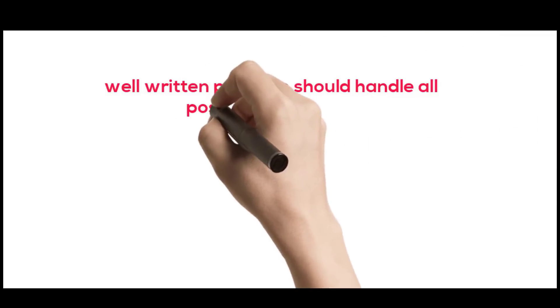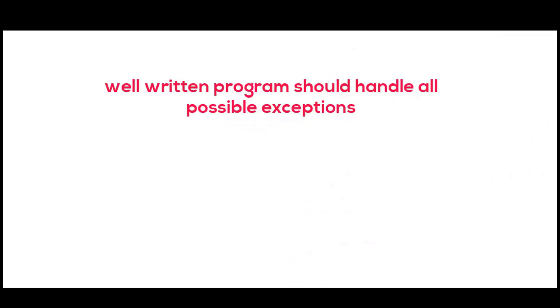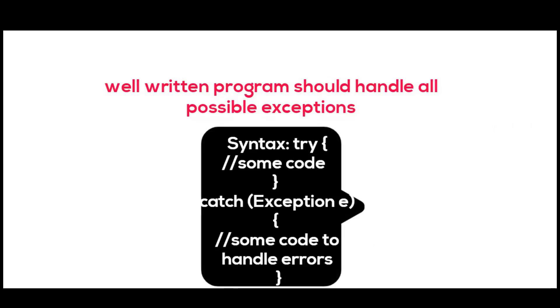A well-written program should handle all possible exceptions. The exception can be caught by using the combination of try and catch keywords. We will write the code in try block. If an exception occurs, catch block will catch the exception.